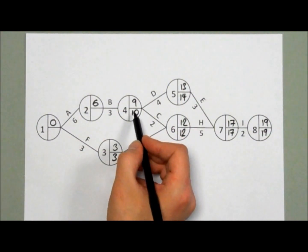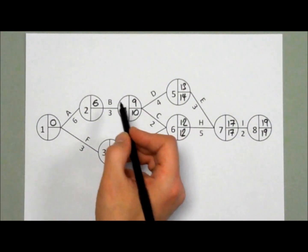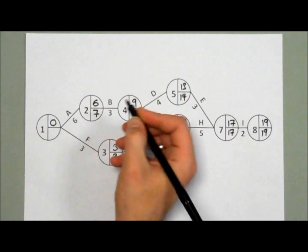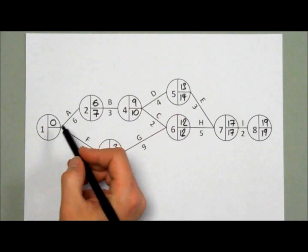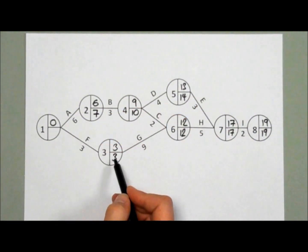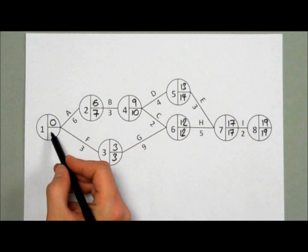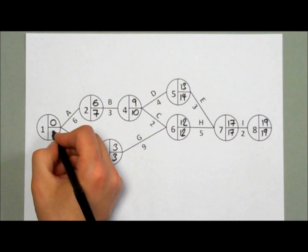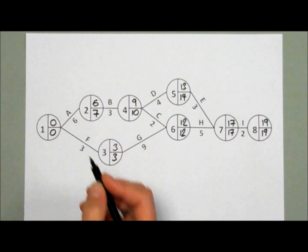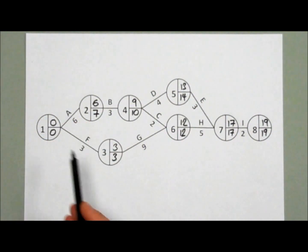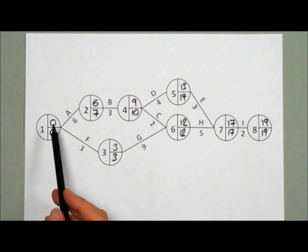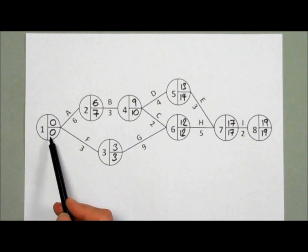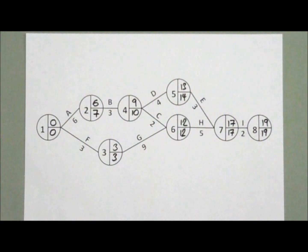3 minus 3 is 0, so we go for the lowest number, which is our 3 minus 3, so it's 0. Coincidentally, node 1 always has an early start time and a latest finish time of 0. So let's now work out our float and our critical path. We'll keep a record of all our tasks that have float as we go on, and we'll also detail afterwards what our critical path is.